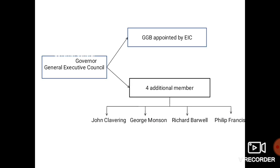Looking at the Governor General Executive Council structure: the Governor General of Bengal was appointed by the East India Company, and four additional members were appointed by the British Parliament. The four additional members were John Clavering, George Monson, Richard Barwell, and Philip Francis. These four members are important as this was the first time the British Parliament directly appointed officials for India.